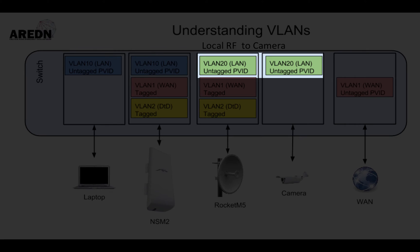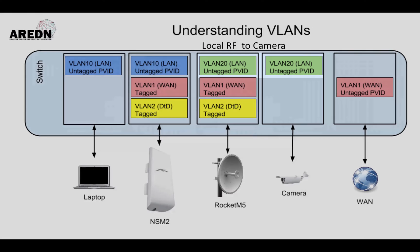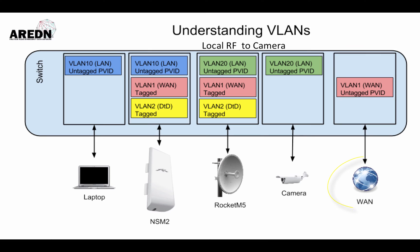Note that the VLAN numbers 10 and 20 are arbitrary. Port 4 is the LAN port for the Rocket M5 attached to port 3. Therefore, the camera on port 4 will receive an IP address from the Rocket M5. Finally, port 5 is our WAN port. We will assume that this has internet access.